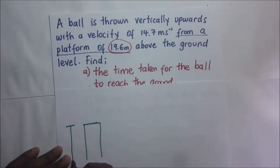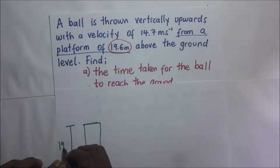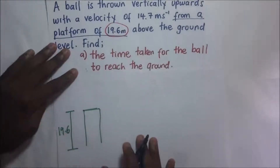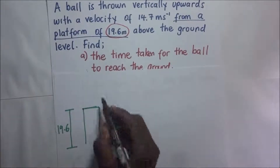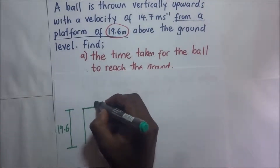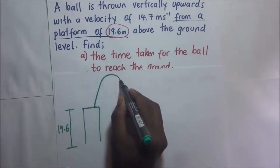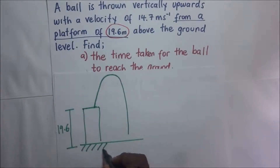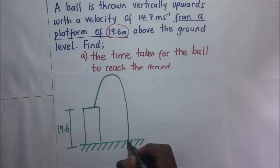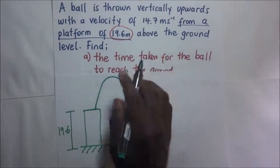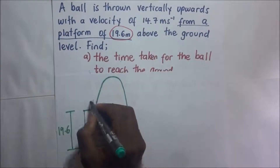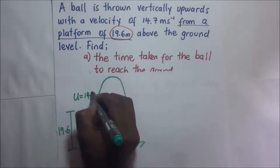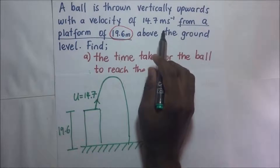This platform is 19.6 meters above the ground. The ball is thrown vertically upwards, so it will go up then come back down. This is our ground. The ball is thrown upwards with a velocity of 14.7 meters per second — that is, it's going upward with the velocity of 14.7 meters per second.